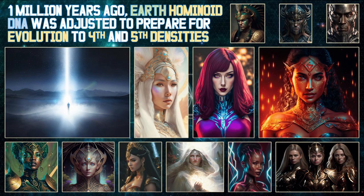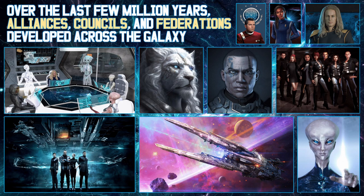At that time, Earth hominoids already had DNA from several star beings, including reptilian. Over the last few million years, alliances developed across the galaxy. The Galactic Federation now represents 200,000 star systems. The Pleiades joined 300,000 years ago, and Draconia joined in 1998.